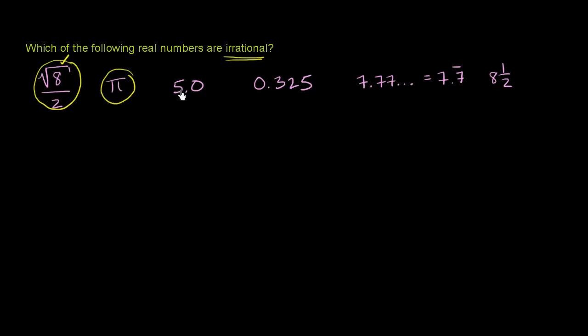5.0. Well, I can represent 5.0 as 5 over 1. So 5.0 is rational. It is not irrational.